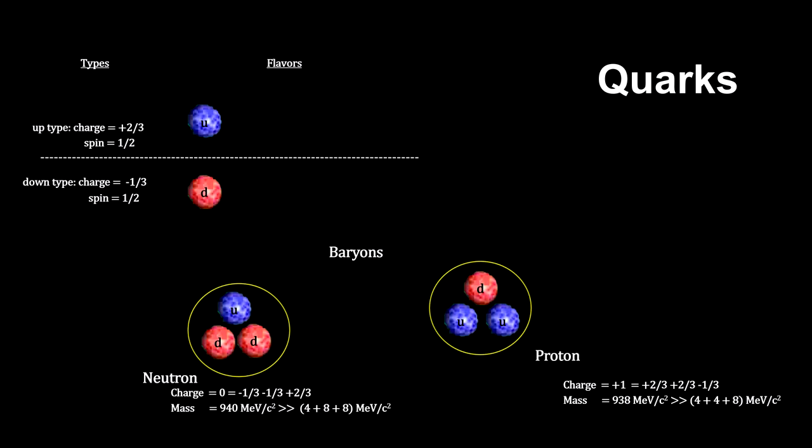The up and down quarks are the lightest and most stable quarks, and all other quarks will decay into these two over time.